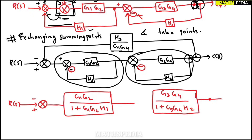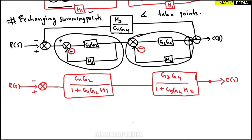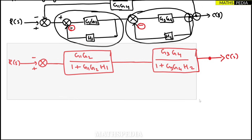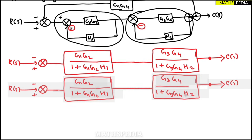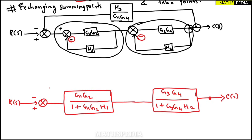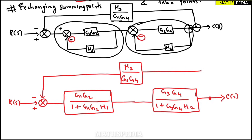After reducing both minor loops, a takeoff point remains leading to the output C(s). The upper feedback path with block H3/(G1G4) is also present, connecting from C(s) back to the outer summing point. I'll draw that upper feedback portion — it starts from the feedback side, goes through the summing point, and connects through the block H3/(G1G4).